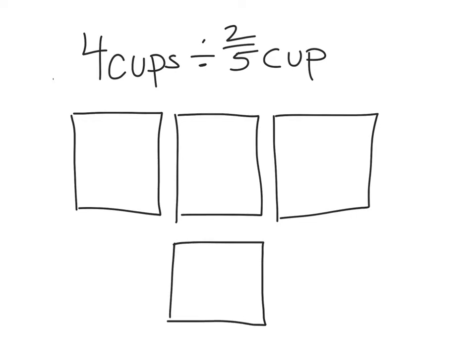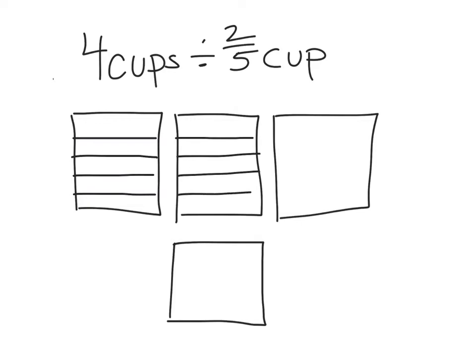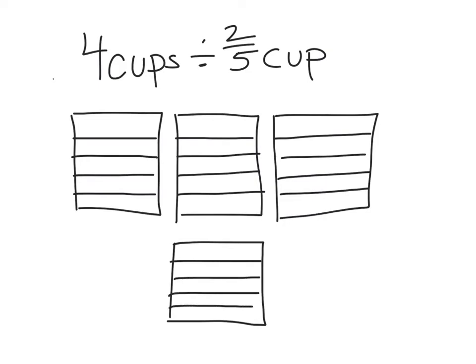Since I am putting them into groups that are 2 fifths, what makes sense is that I'm going to divide or split each of my wholes into fifths so I can see what I have. Now when we look at it this way, I now have 4 total cups that have each been split into 5 pieces. So in other words, I have 20 pieces, or 20 fifths, that I'm now going to divide into groups of 2 fifths.